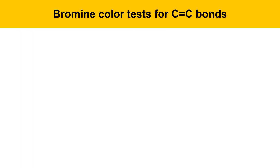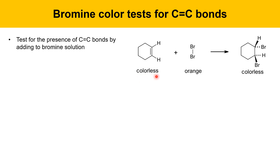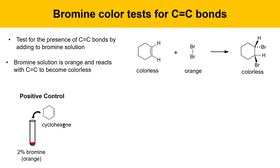Next, we'll do color tests to check for the presence of double bonds. The bromine solution test: a colorless alkene reacts with orange bromine to produce a colorless product. We'll do three experiments. First, a positive control — add cyclohexene to 2% bromine solution to see what a positive test looks like, since cyclohexene has a double bond and we expect it to react.